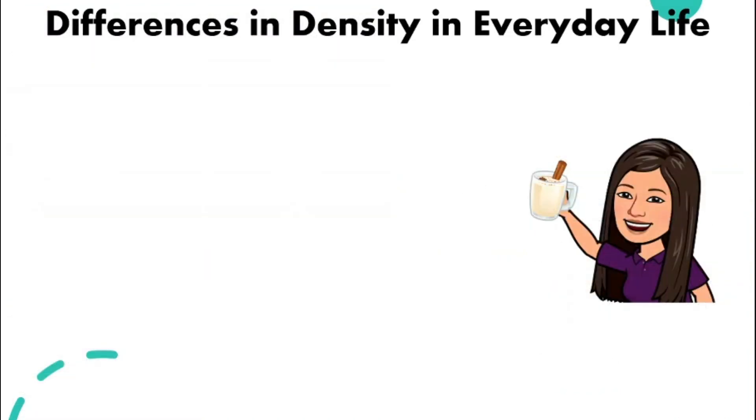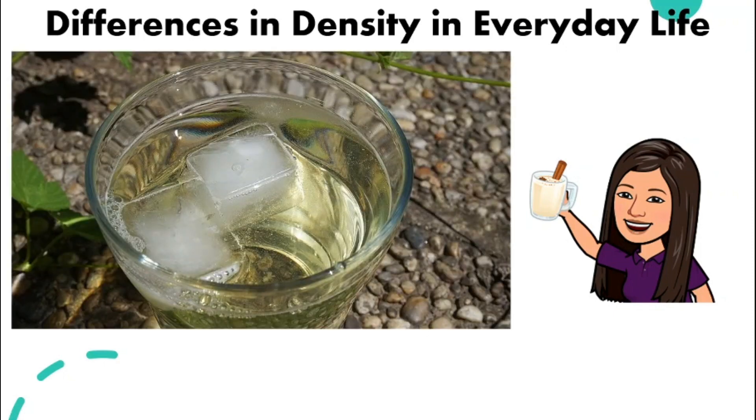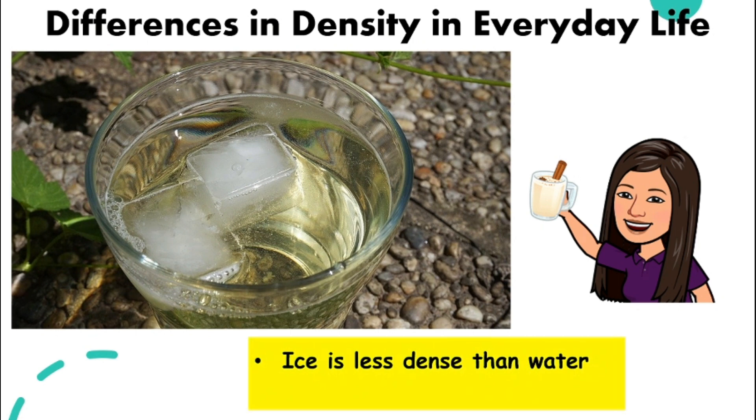So in our everyday life, actually if you pay attention, you can notice the differences in density. For example, this example we looked at earlier as well. When we have anything cold to drink and we have ice cubes, for example, ice Milo, ice water, ice juice, ice always floats on water because it is less dense than water. So it will float on the surface.